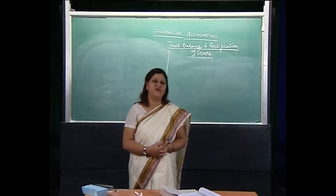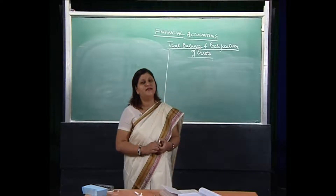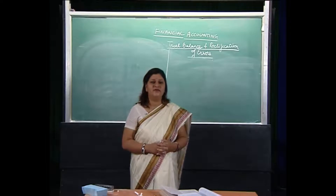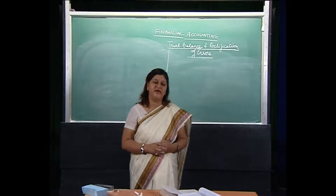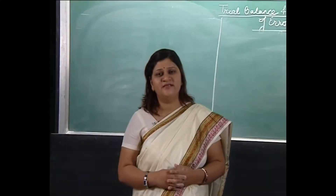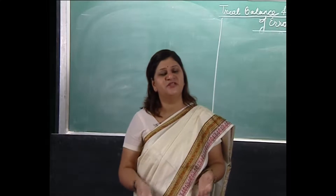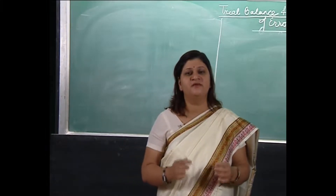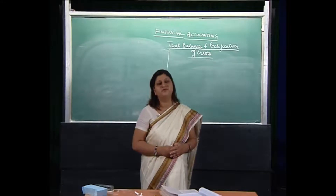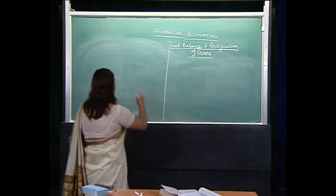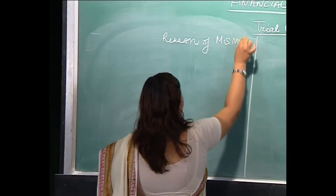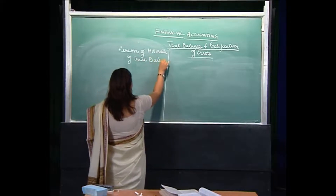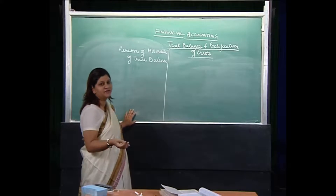We have seen the salient features of the trial balance — how posting is done and that it helps check the mathematical accuracy of posting. Now there are certain limitations of trial balance. Sometimes the trial balance is not able to locate errors, and sometimes it is. Let's see when the trial balance agrees even after a mistake and when it disagrees and shows errors. First we will analyze the reasons why the trial balance is not matching — reasons of mismatch of trial balance — meaning the debit side of the trial balance is not matching with the credit side.